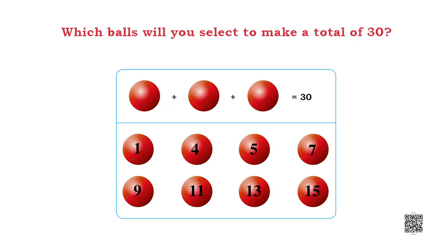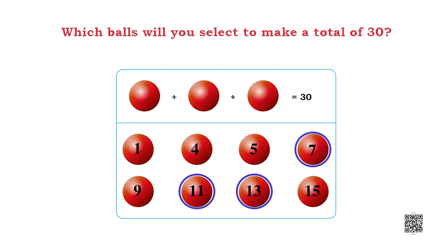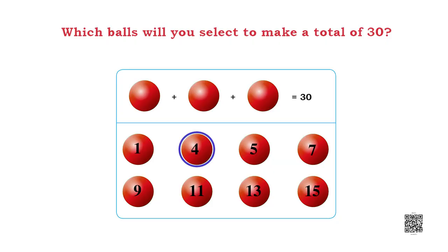Now think which three numbers should be taken from the given numbers which when added will give a total of 30. If you add 11, 13 and 7, what will it be? 31 — no, this is not the correct answer. Let's try another way. We will pick 4 from one circle, 11 from the second circle and 15 from the last circle. That makes 30. We have found it! Now the numbers 4, 11 and 15 have to be written in the empty circles. 4 plus 11 plus 15 is equal to 30. This puzzle is also complete — very easy, isn't it?